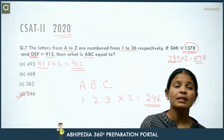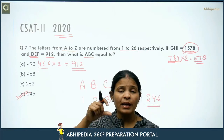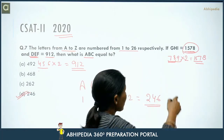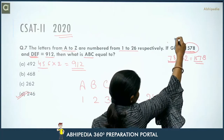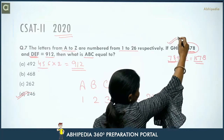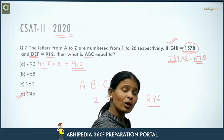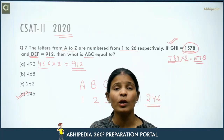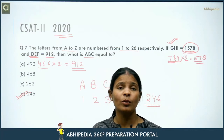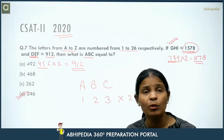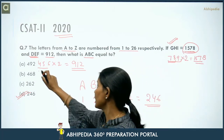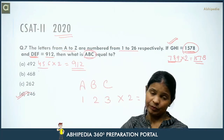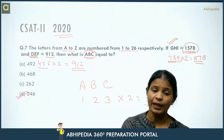The key is to find how the code in the question was generated. Once you know the logic, apply the same logic to the new word to find its code.